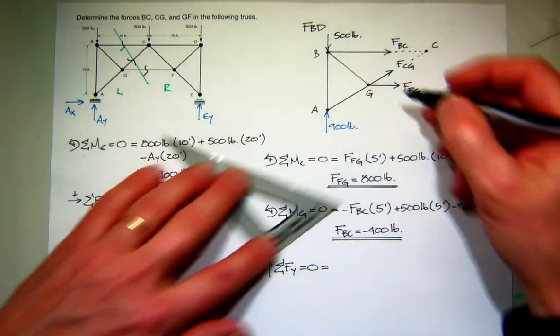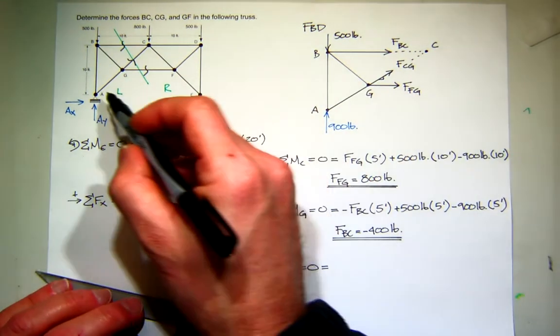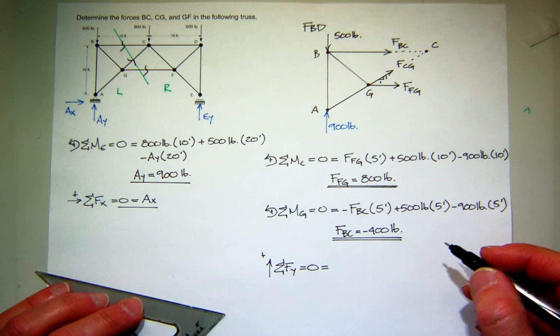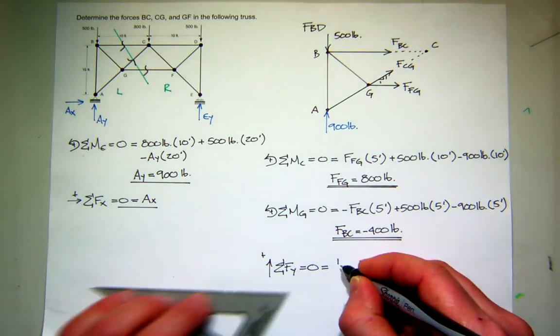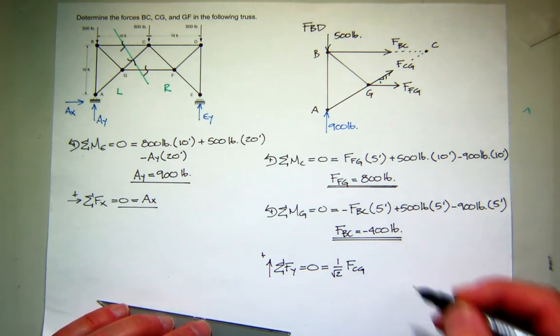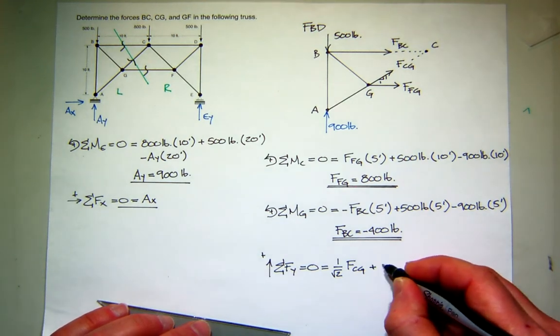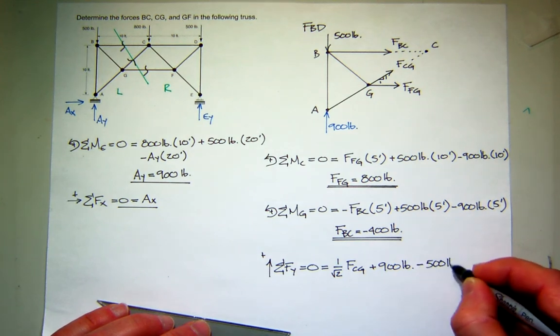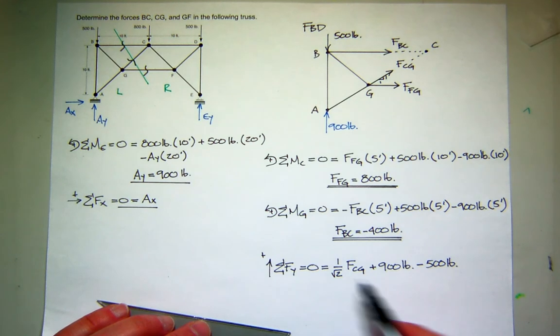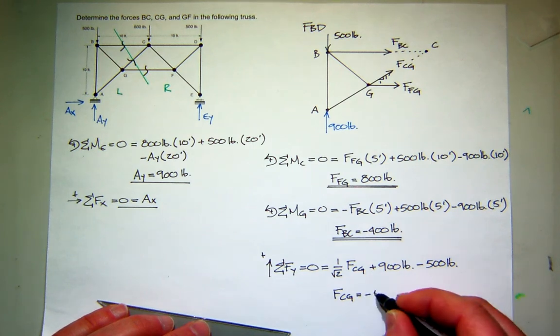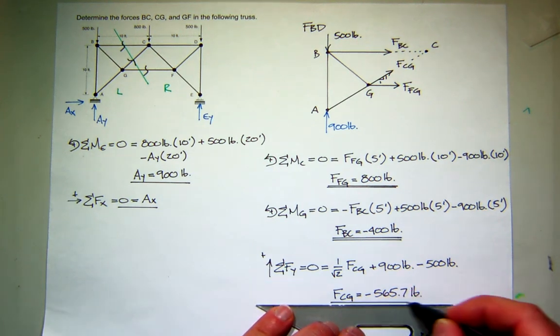And we decided earlier that the easiest way to get that was to sum forces in the y direction. So let's do that. So I need to know this rise over run here. What is it? Looks like it goes up 10 and over 10. So that's one to one. So that means the hypotenuse would be square root of 2. So the y component would be 1 over the square root of 2. And it's acting up. So that's positive. CG. What else do we have in the y direction? We have our reaction 900 pound force up and our load 500 pound force down. So it looks like that's going to be 400. What's 400 times the square root of 2? That sounds good to me. And it came out in compression. Does that make sense that it would be in compression?